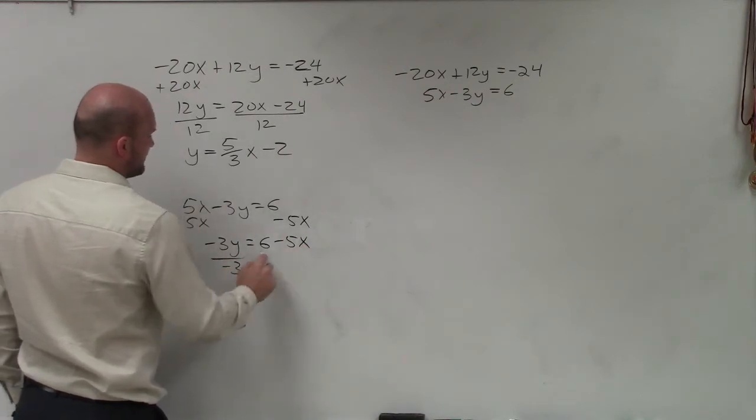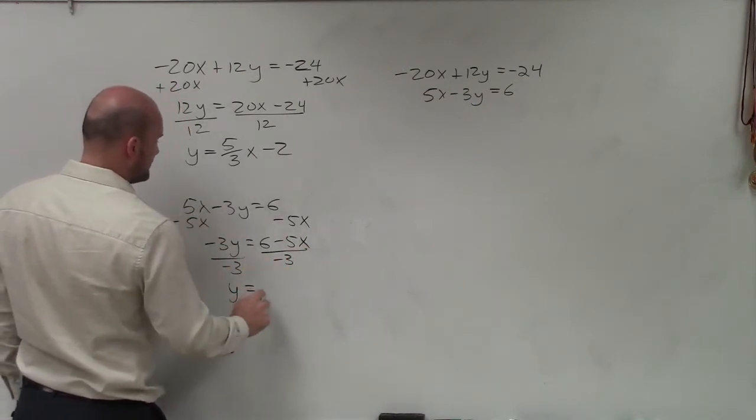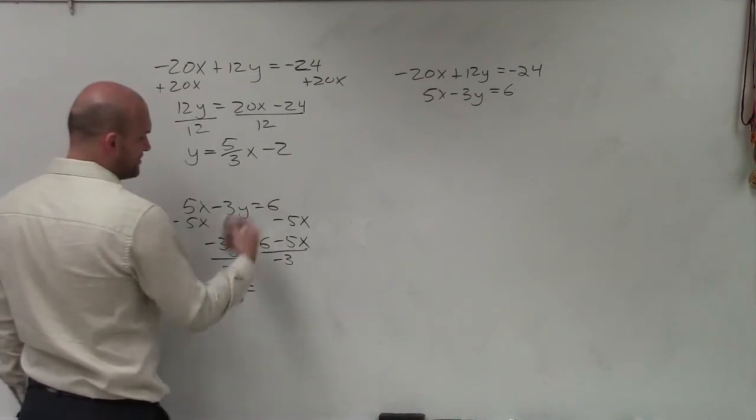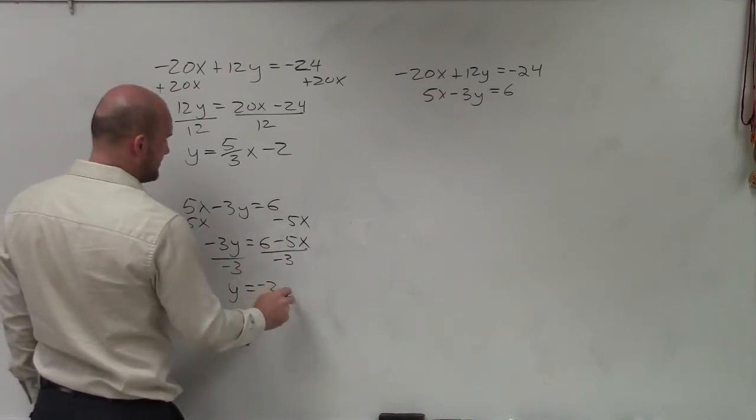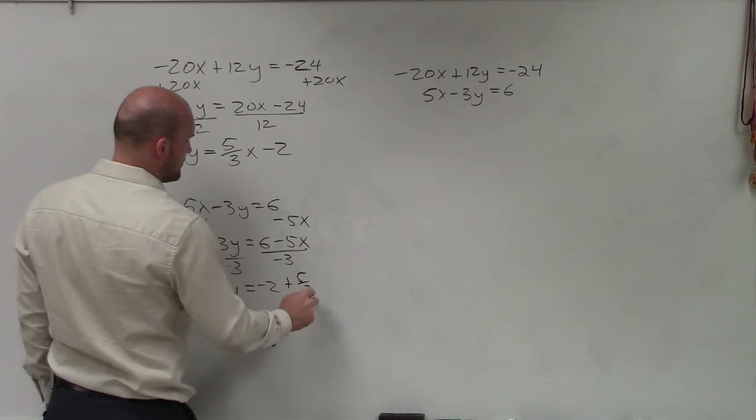Divide by negative 3. Divide by negative 3. And I get y equals, I guess I probably should have rewrote those, but that's okay. That will become a negative 3 plus a 5 thirds x.